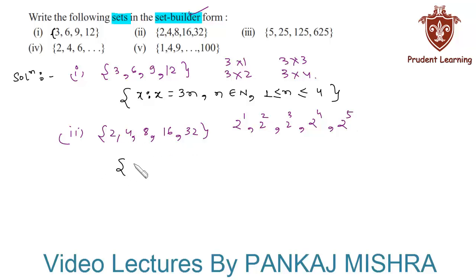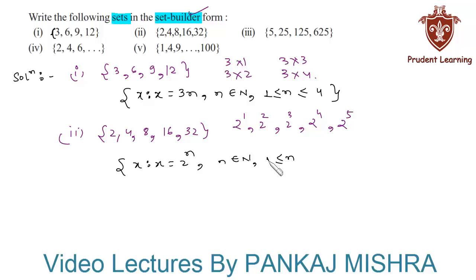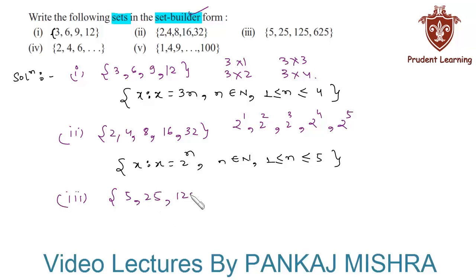So the given set can be written in set builder form as: X such that X = 2ⁿ, where n belongs to natural numbers and n is greater than or equal to 1 and less than or equal to 5.